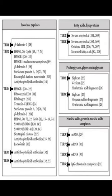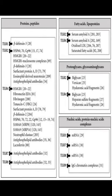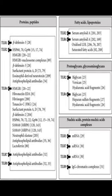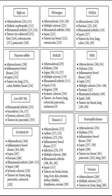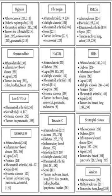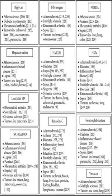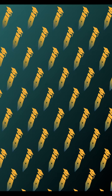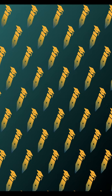Damage-associated molecular patterns, DAMPs, are intracellular and extracellular molecules released upon tissue damage, which activate toll-like receptors, TLRs, to induce inflammatory gene expression for tissue repair.